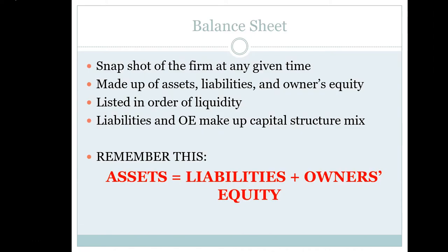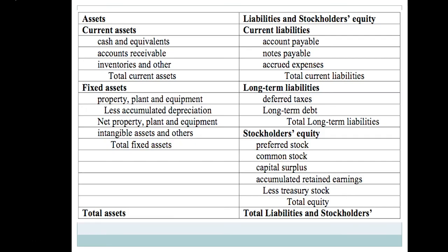The balance sheet is a snapshot of the firm at any given time — assets, liabilities, and owner's equity. All items on the balance sheet are listed in order of liquidity. Liabilities and owner's equity on the right-hand side make up the capital structure mix. The balance sheet identity, shown in red, states that assets must equal liabilities plus owner's equity — that's the balance in the balance sheet. This is not something we invent; these two sides are equal because they have to be, and there is strong economic reasoning behind it.